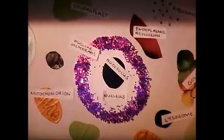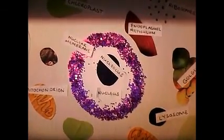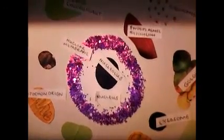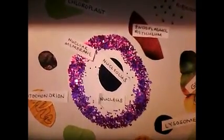Moving right along, we have the nucleolus. It's the black dot that you see inside the center of your screen. The nucleolus is where RNA is produced. Surrounding the nucleolus is the nucleus. This is the cell's headquarters — it controls many of the functions of the cell by controlling protein synthesis and contains DNA and chromosomes.